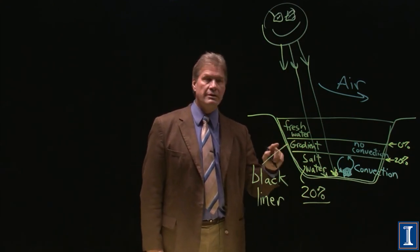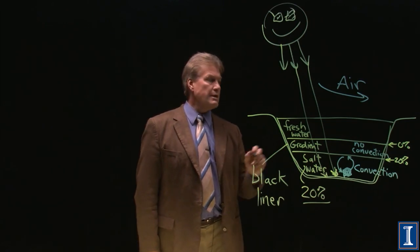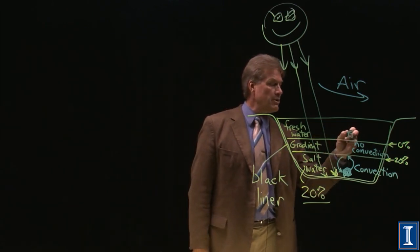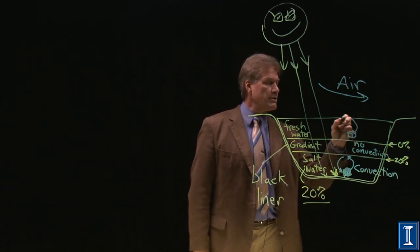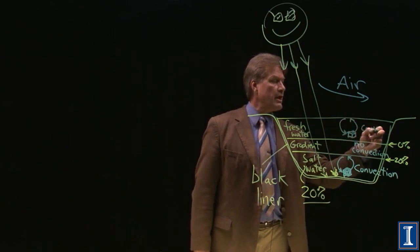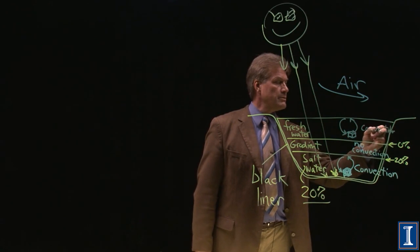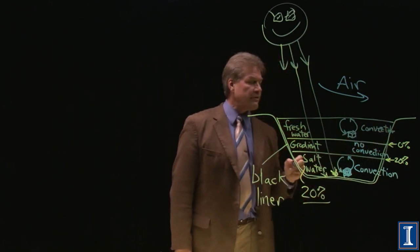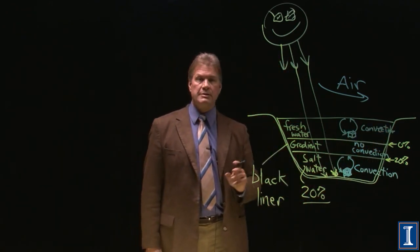This gradient layer insulates the bottom of the pond. Indeed, the water that's up here, the little chunks of water, they go up and they go back down. And the fresh water, like any other, has convection. This non-convective layer insulates the bottom of the pond.